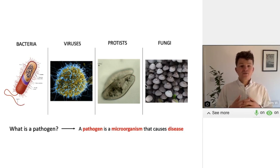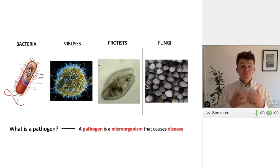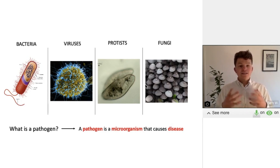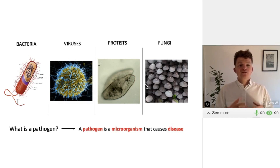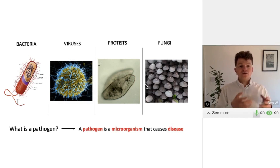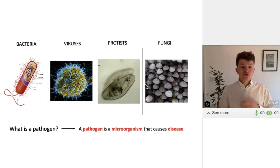The third type of pathogen you need to know about is protists — and you might not have heard of that term before. An example of a protist would be malaria, which is a single-celled organism that is transmitted by mosquitoes. We call those mosquitoes that transmit the malaria protist vectors.